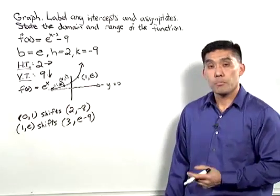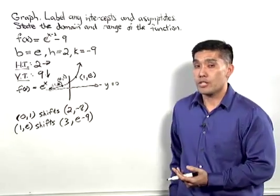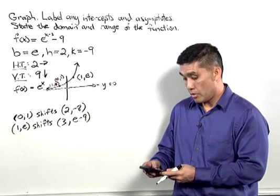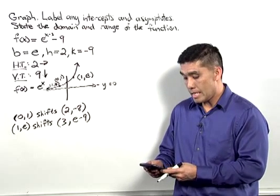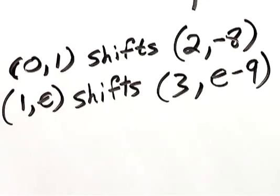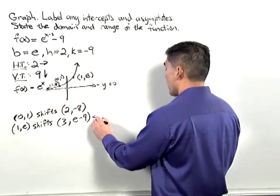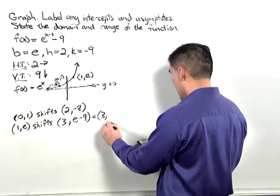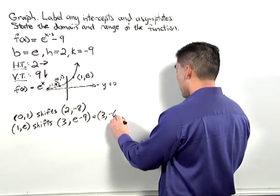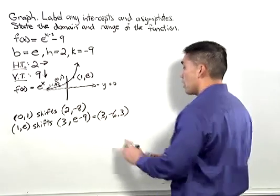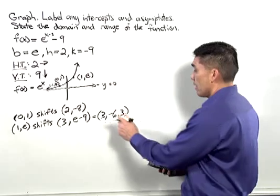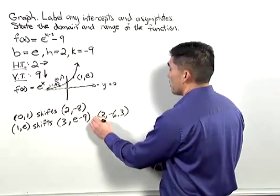A good idea here may be to approximate this by getting out your calculator. So in this case, we're going to take e minus 9. Plugging that in, this point turns into 3 comma negative 6.3, approximately. So we should label this with an approximation symbol.